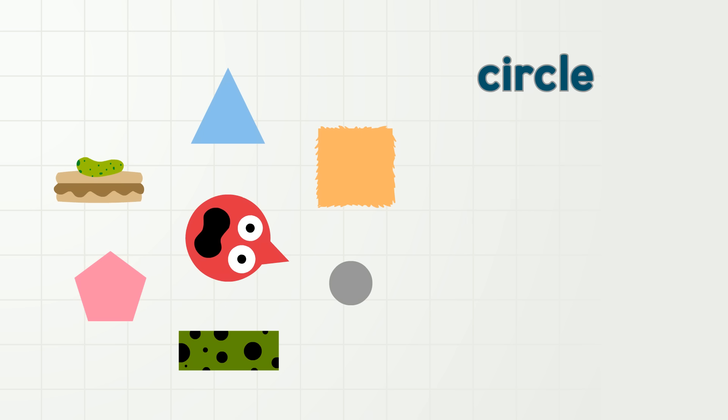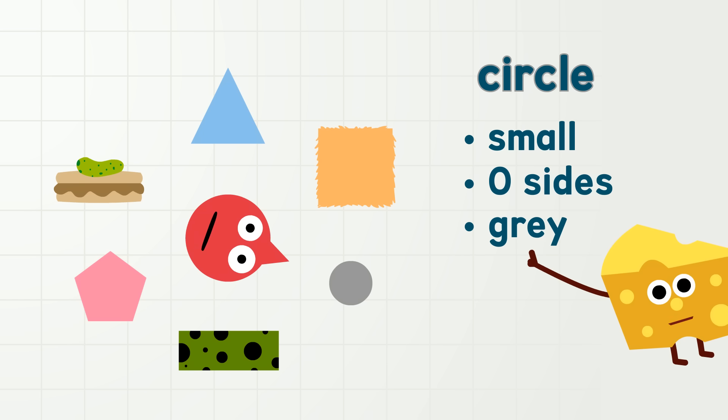Circle, circle, wow! What a great shape. Is kind of small. Has zero sides. And is gray. Attributes!